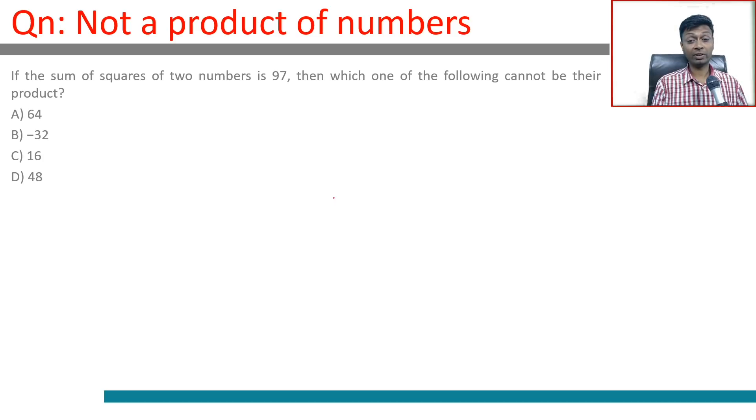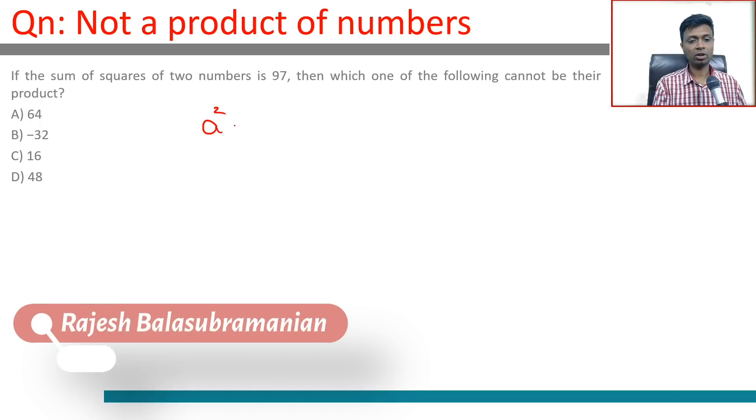The sum of the squares of two numbers is 97, then which of the following cannot be their product? a² + b² = 97.